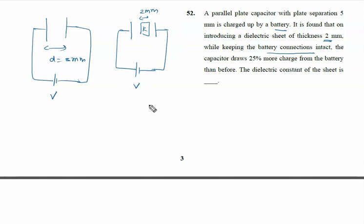Now you have to understand. If the battery is connected, the voltage will be constant. If the battery is connected, the charge will be constant.